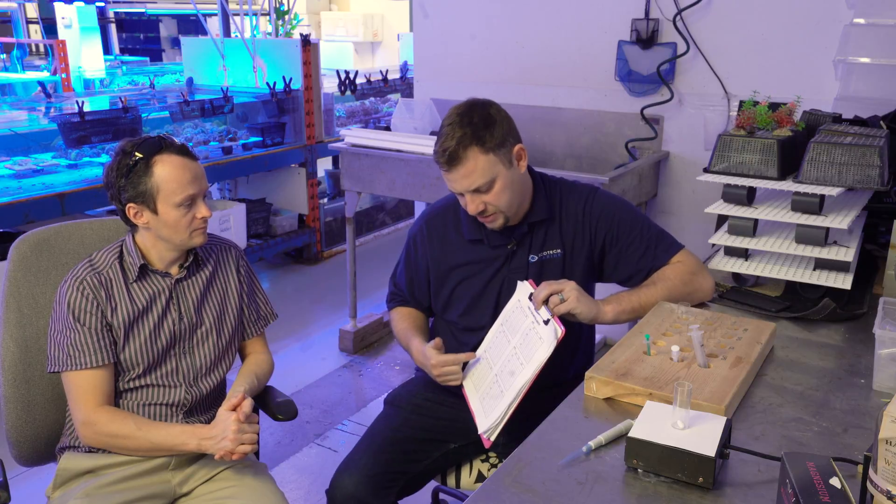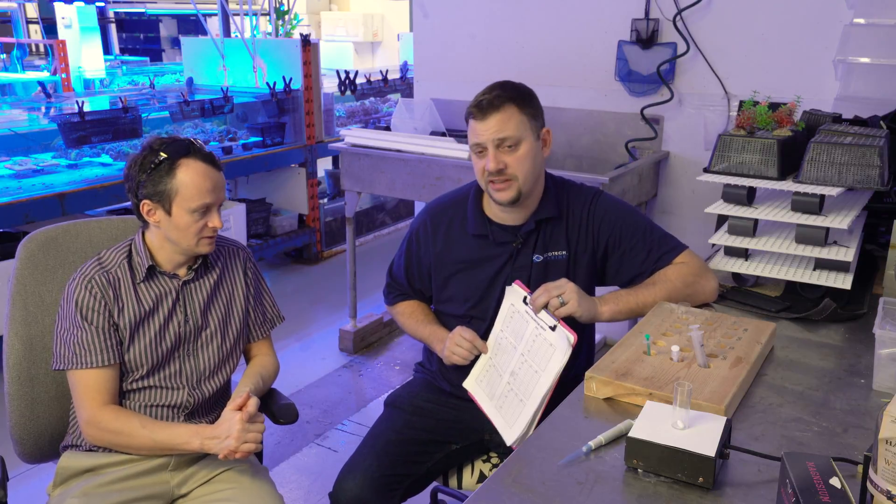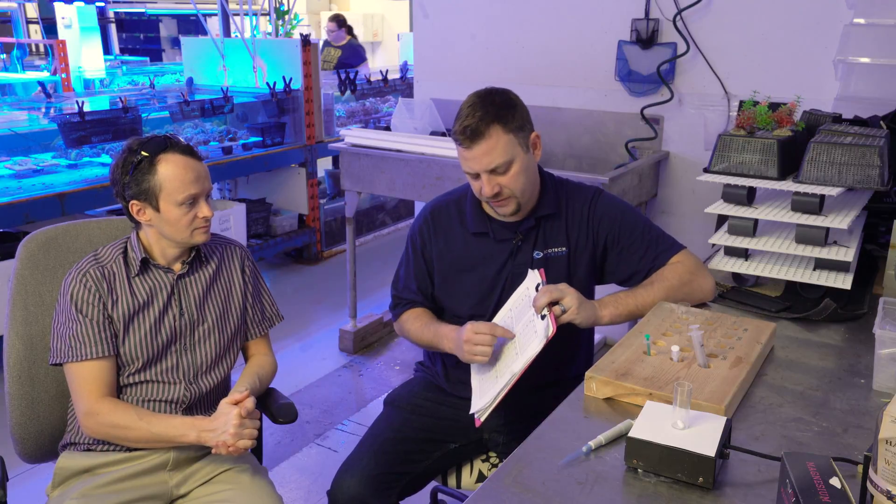If you're getting a funky value and it's just not making sense, open another test kit and test it. And that brings up a good point too about your literature. For instance, in your case, your longest tenure employees I believe are the ones doing the testing. But in the event that you have employees who are not that experienced, having values, range values that they should double check if what they're getting is outside of that range is a good way to highlight exactly what you're talking about.